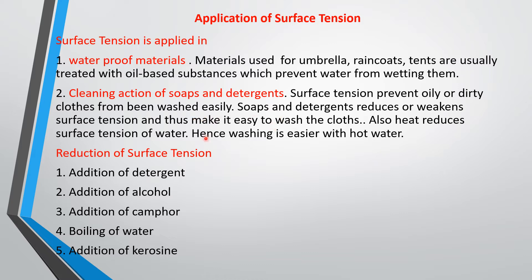Surface tension can be reduced by the addition of detergent, addition of alcohol, addition of camphor, boiling of water, or addition of kerosene. For example, if your needle is floating in water and you want it to sink, just add a little kerosene. The kerosene will break the bond between the water molecules and the needle will sink. Detergent, alcohol, and camphor all reduce surface tension in the same way.